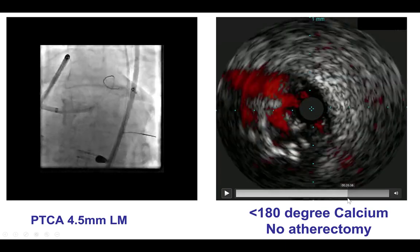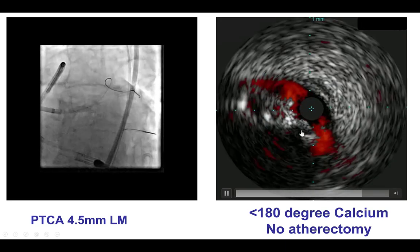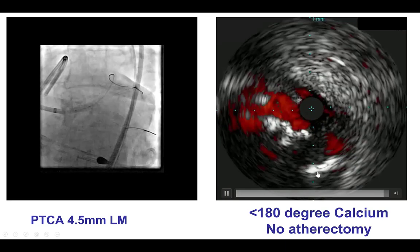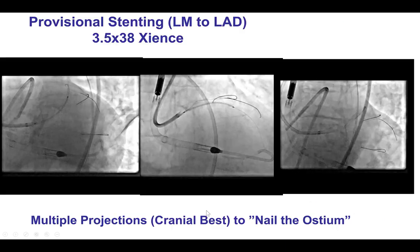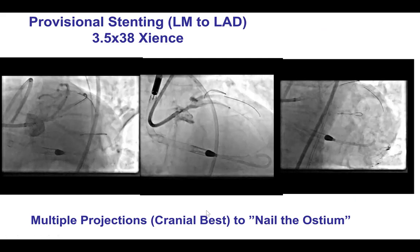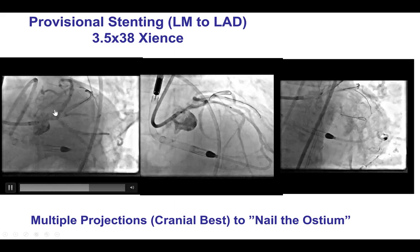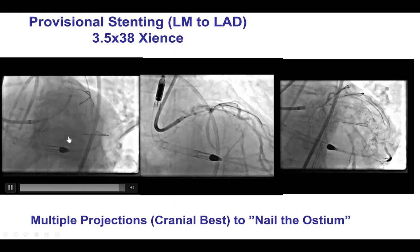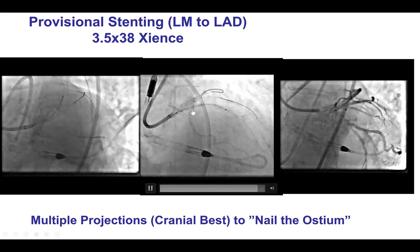Here is the left main. There is some calcification, but it is about 180 degrees, so it's not circumferential. Because of that, we decided to actually not do atherectomy as we had initially thought about doing. As mentioned before, we did not see significant disease at the ostia of the three major vessels — LAD, ramus, and circumflex — and as a result, we decided to use provisional stenting.